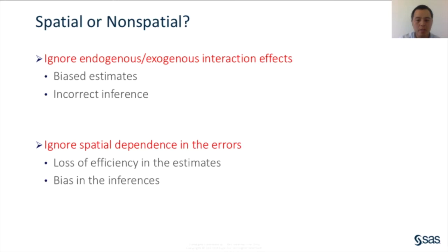On the one hand, ignoring spatial lag dependence, or endogenous interaction effect, leads to biased and inconsistent parameter estimates. As a result, the inference based on these estimates will be incorrect. On the other hand, ignoring spatial error dependence, or correlated errors, leads to unbiased yet inefficient estimators. Since the estimates for the standard errors are biased, any resulting inferences such as t-tests and F-tests will be biased. Spatial econometric models account for various forms of spatial dependence to ensure that the resulting parameter estimates and inference are correct. Ignoring spatial dependence comes with substantial risks, which is why we introduce spatial econometric modeling in this tutorial.